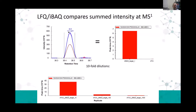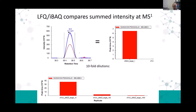Decades ago, before Orbitraps, before high-resolution accurate mass instruments, getting this type of signal was much more challenging—as Rick may mention. At one point, it wasn't really possible to accurately measure the signal such that we could obtain an accurate measurement of quantity. But now we can, so it's one of the preferred methods.